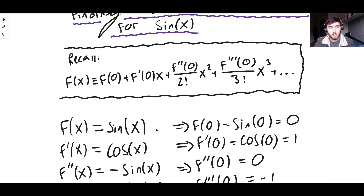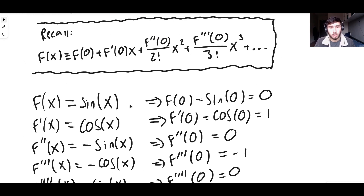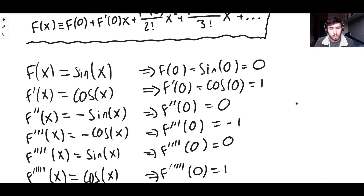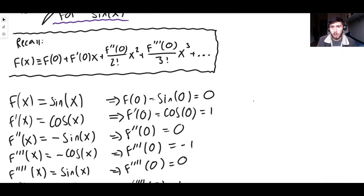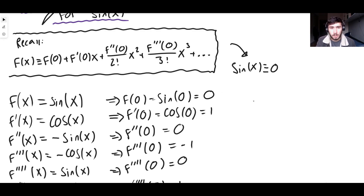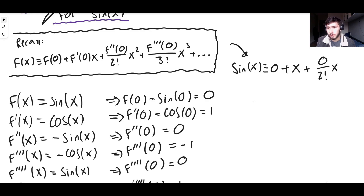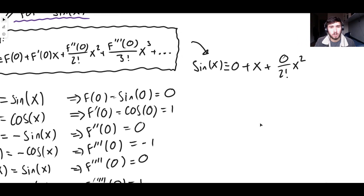Now that we have all these derivatives we can plug into the formula. f of x equals f of zero plus the derivative at zero times x, and so on. So sine x equals: f of zero is zero, so that's zero. Plus the derivative at zero, which is one, times x — so just x. Plus the second derivative at zero, which is zero, over two factorial times x squared — that whole term is zero.